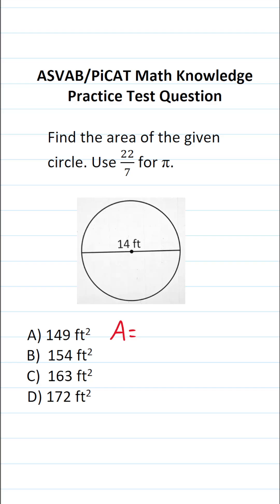The formula to calculate the area of a circle is pi r squared, where r of course refers to the radius of the circle.